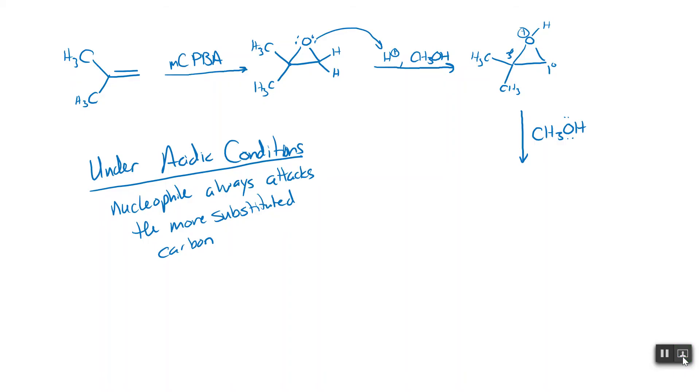So if you have an acid, under acidic conditions, things like H+ or Lewis acid, when those things are present, the nucleophile will always attack the more substituted carbon. So in this case, when we're choosing between the primary carbon and the tertiary carbon, our methanol will add to the tertiary carbon, break the carbon-oxygen bond, and push out the oxygen.